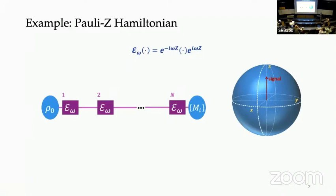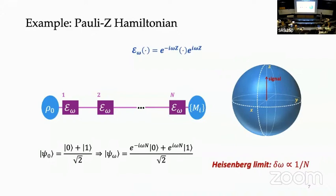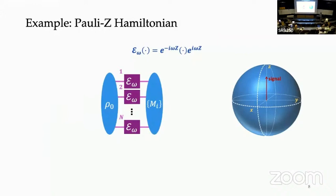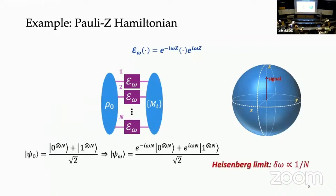Let me go through in more detail how to achieve the Heisenberg limit or standard quantum limit in this example. With no noise at all, you don't need any quantum control — just apply the same channel on the qubit multiple times. Starting with a plus state, you accumulate a phase difference of omega*N proportional to N, naturally achieving the Heisenberg limit. You can also achieve this with a parallel strategy using a GHZ state as input, which again generates a phase difference proportional to N.